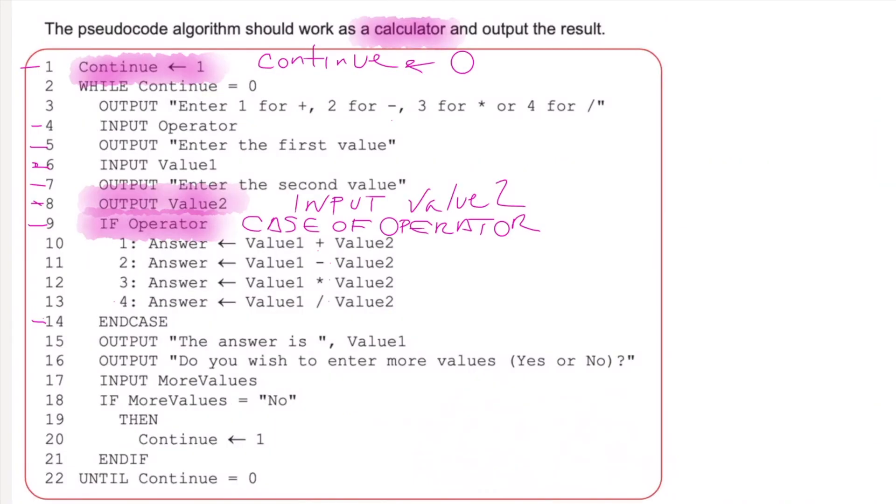So let's carry on. So end case, fair enough. And then we're going to output the answer is value 1. Well, value 1 is one of the inputs we've put in. So surely the output, the answer is answer. Whether they've chosen 1, 2, 3, or 4, the answer should be answer. So I'm just going to highlight that. The answer shouldn't be that, should it? It should be the answer is answer. So output the answer is answer, whether it's 1, 2, 3, or 4. So that is how many we've got there? There's 5 errors. Output, do you wish to enter more values, yes or no? If, input more values. So if more values equals no, then continue equals 1. So that means if it continues changes from 0 to 1, that means it stops working. That's fine. If they type anything else in, there's not really any validation. They could type anything. But I'm not worried about that. That's just validation.